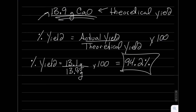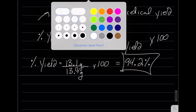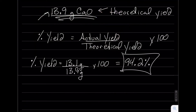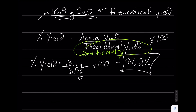Hopefully that's not too bad. Just keep straight actual yield versus theoretical yield — actual yield is what happens in the laboratory, and theoretical yield comes from stoichiometry. Alright folks, that's it for today. Have a good one.